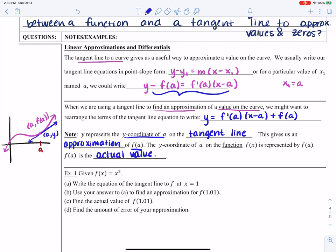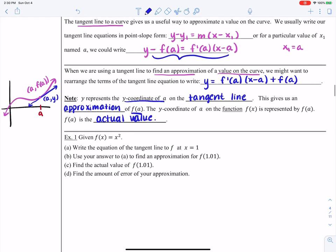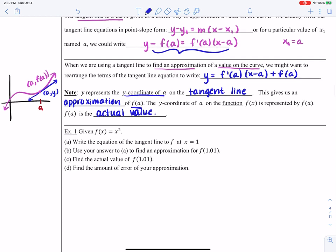On the tangent line, this point is going to be a and some y value. So what we're saying is, if I can build a tangent line, as long as I'm pretty close to a, I could actually plug in other values into this tangent line and use this as an approximation. So let's explore this.